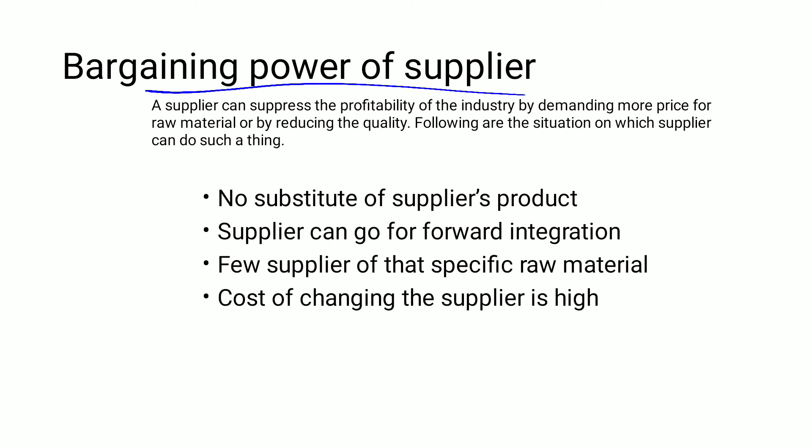The fourth force is the bargaining power of suppliers. A supplier can suppress the profitability of an industry by demanding higher prices for raw materials or by reducing the quality of supply. The supplier, as the business providing raw material, has the power to decrease or suppress industry profitability. The end customer is ultimately affected by these supplier decisions.